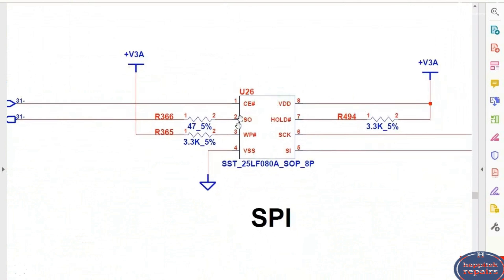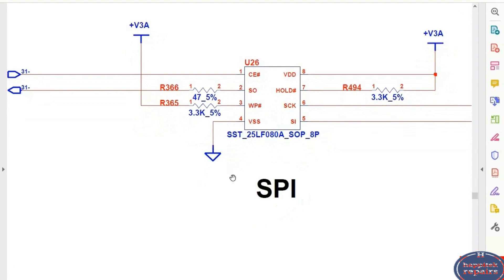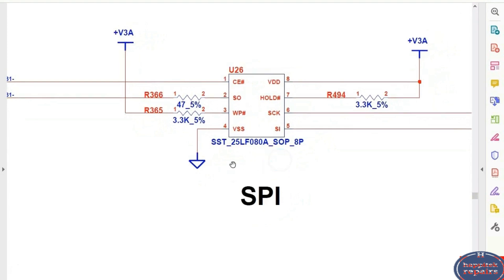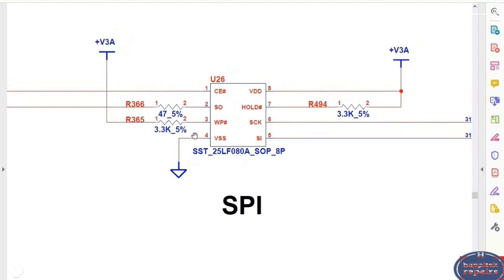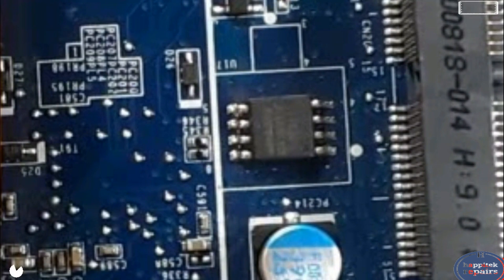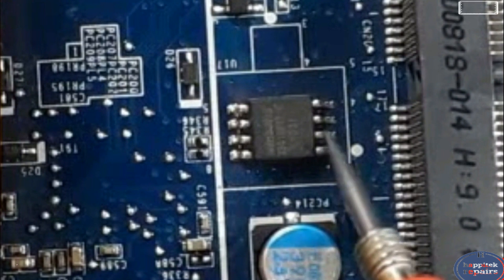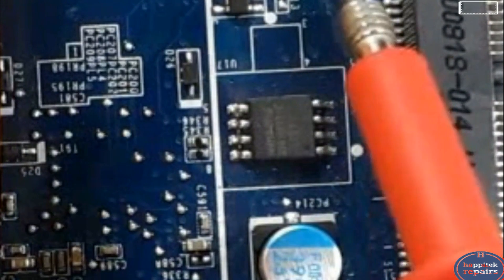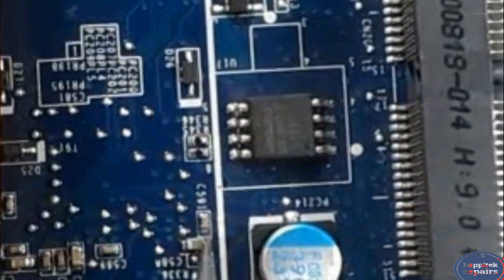This is the schematic of the SPI — the serial peripheral interface for the BIOS. This is an 8-pin BIOS; pin number 4 is always connected to ground. The reference for this BIOS is SST25LF080. On a real motherboard, here is the actual BIOS chip — the white dot indicates pin number 1, followed by pins 2, 3, 4 (connected to ground), then 5, 6, 7, and 8 which is connected to power.